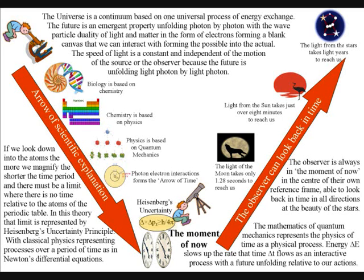In this theory, the limit is represented mathematically by Heisenberg's uncertainty principle, with quantum physics representing the mechanics of time as a physical process, and classical physics representing processes over a period of time, as in Newton's differential equations.